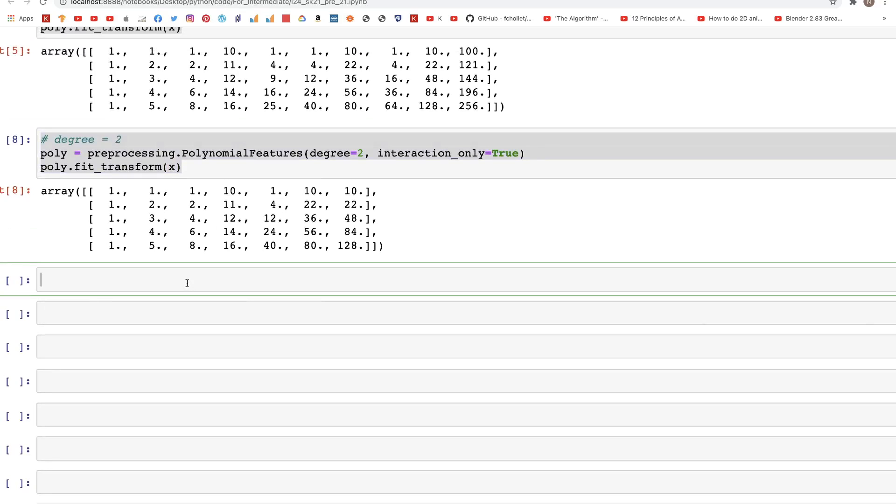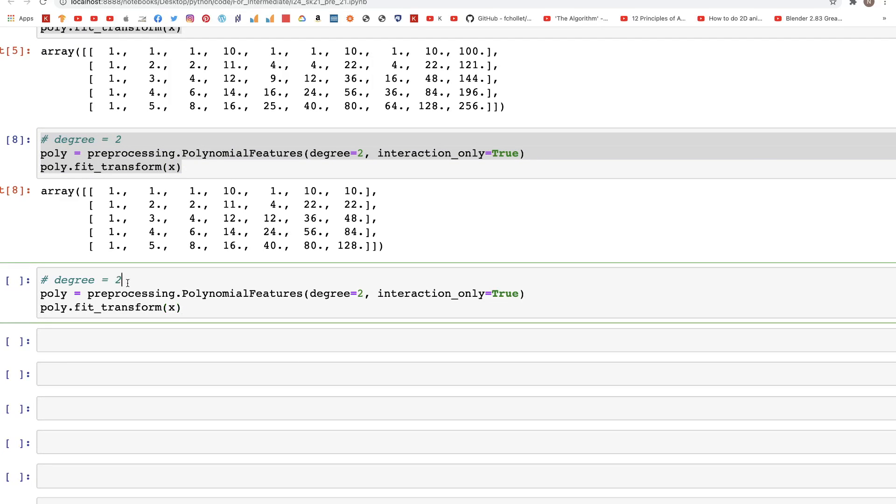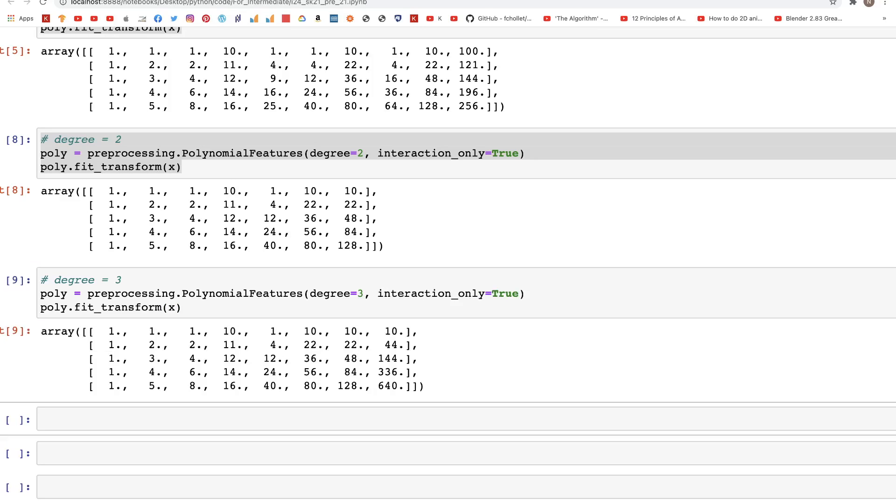In addition to this, we also looked at degree three in the presentation. So let's change the degrees to three and see what output we get. So we get this additional interaction column which is the multiplication of these three columns right here.